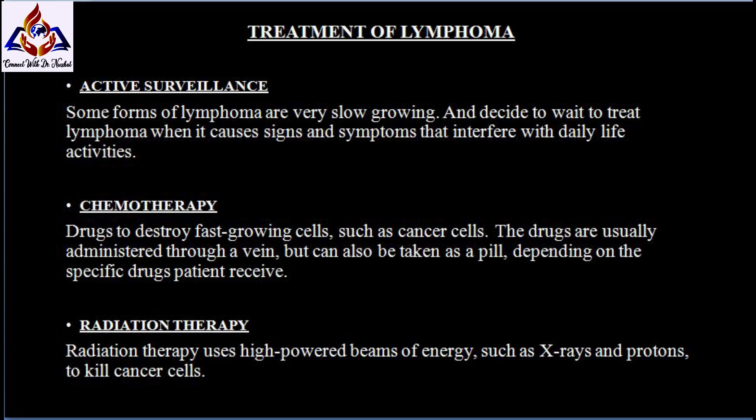Chemotherapy uses drugs to destroy fast-growing cells such as cancer cells. The drugs are usually administered through a vein but can also be taken as a pill depending on the specific drugs you receive. Radiation therapy uses high-powered beams of energy, such as X-rays and protons, to kill cancer cells.